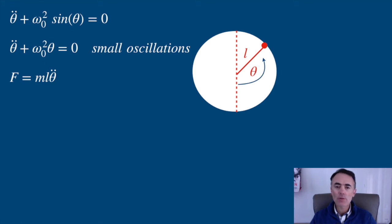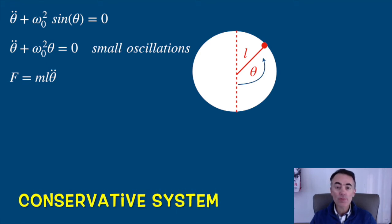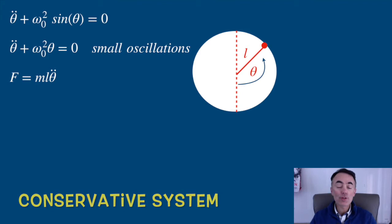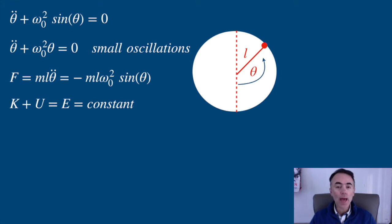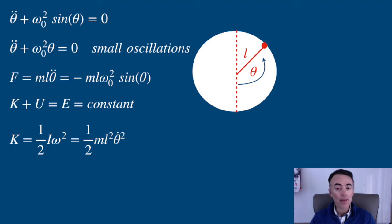In the absence of friction, this is a conservative system, so the energy is conserved. K plus U is E, and this is a constant. The kinetic energy is written as one half l omega squared equals one half ml squared theta dot squared. And the potential energy is written as U of theta equals mgl times one minus cosine of theta.